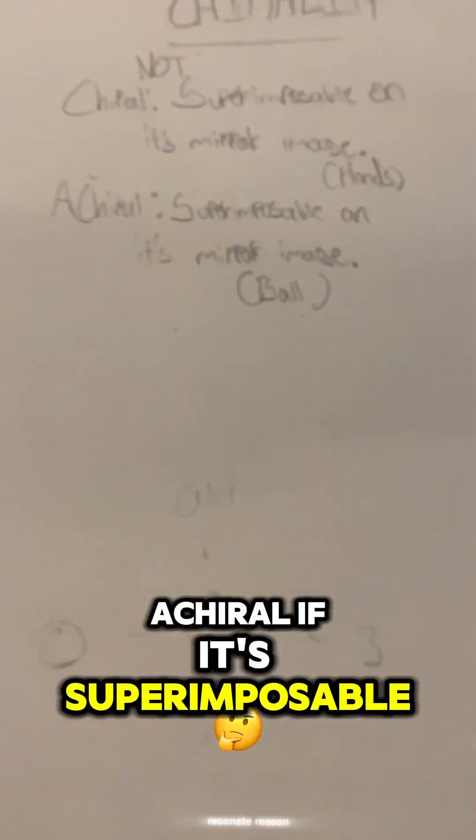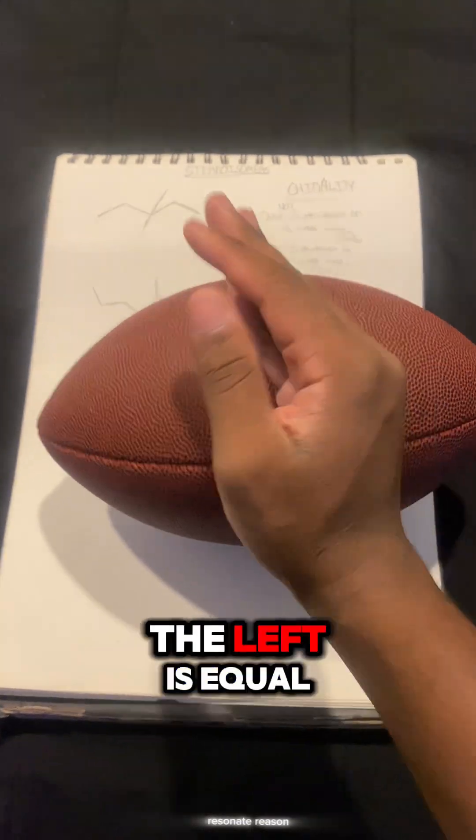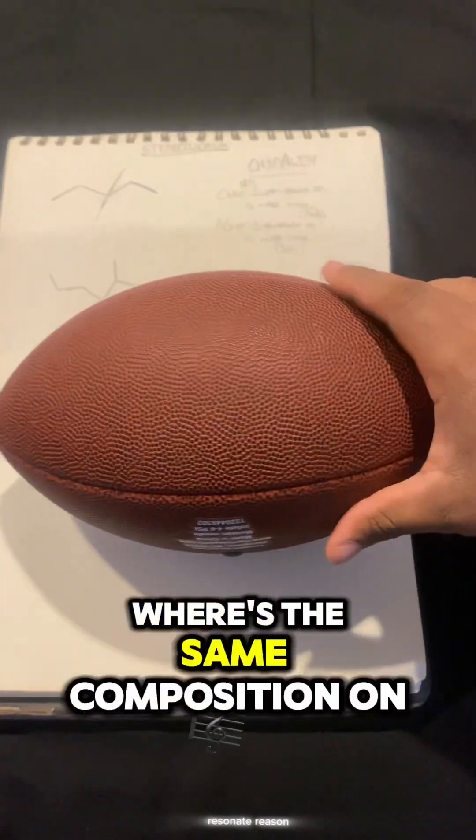And a molecule is achiral if it's superimposable on its mirror image. So imagine you have something like a ball. Let's say this ball has an axis of symmetry, so that means everything on the left is equal to the things on the right, or it's the same composition on both sides.